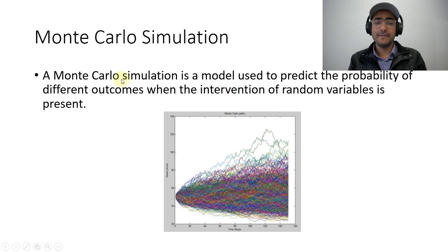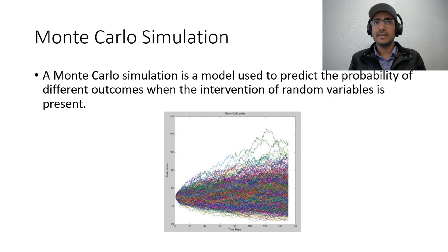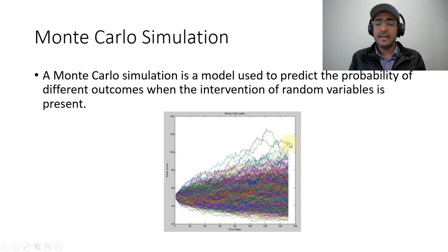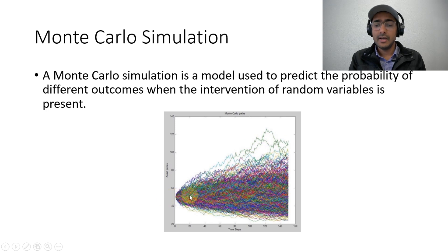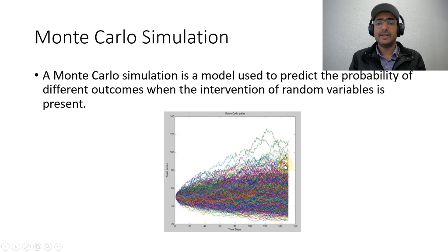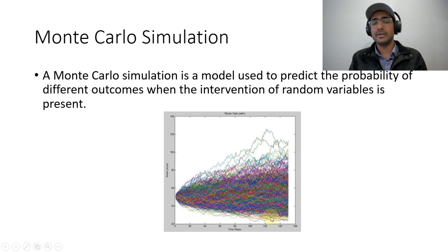In this video, we will do the Monte Carlo simulation to calculate value at risk. As per Investopedia, Monte Carlo simulation is a model used to predict the probability of different outcomes when the intervention of random variables is present. Basically, we provide some randomness to a variable such as stock price, then do multiple simulations using different paths with different random variables, and then analyze the last output of all the paths. The entire simulation of making different paths is known as Monte Carlo simulation.